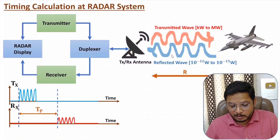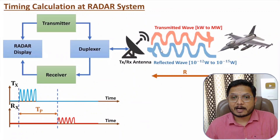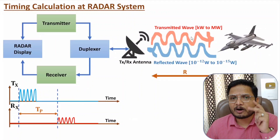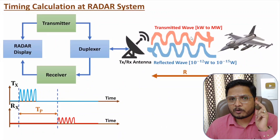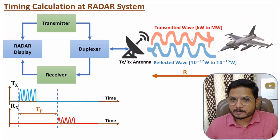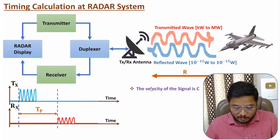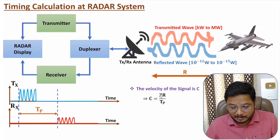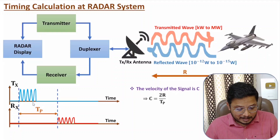The delay between the transmitted signal and the received echo signal is the total propagation time. During this total propagation time, the distance covered by the wave is R + R = 2R. Since we are transmitting electromagnetic waves, the velocity is the speed of light, which is fixed at 3×10^8 meters per second in free space. Based on the velocity equation, one can identify the range.